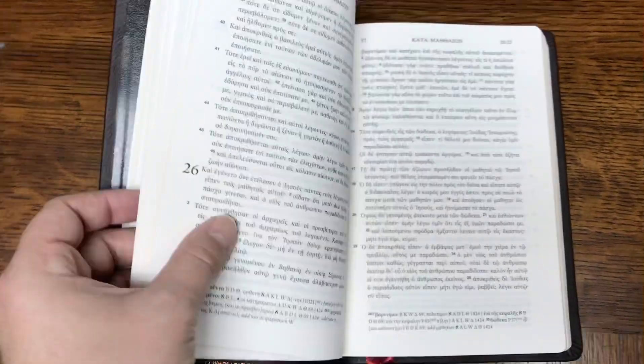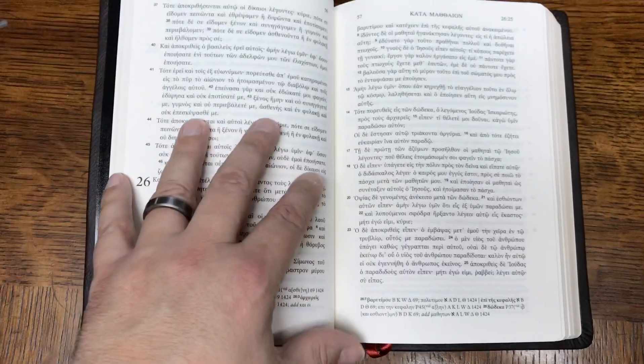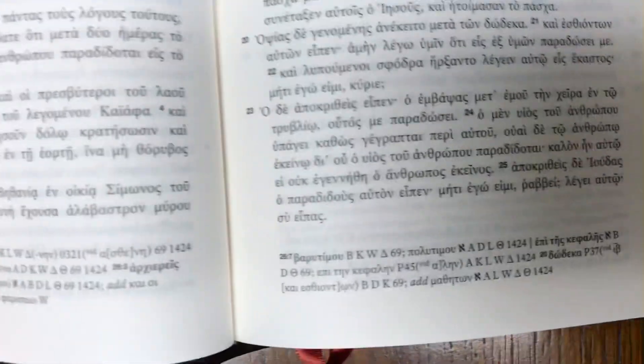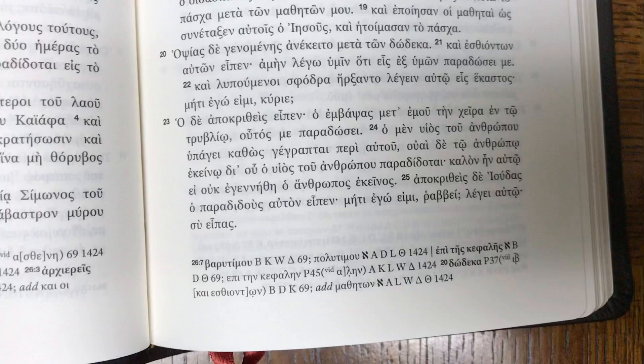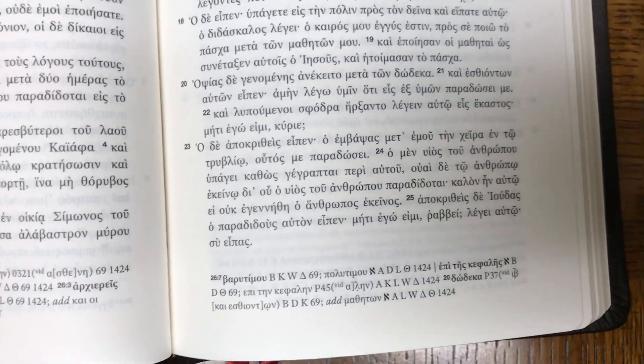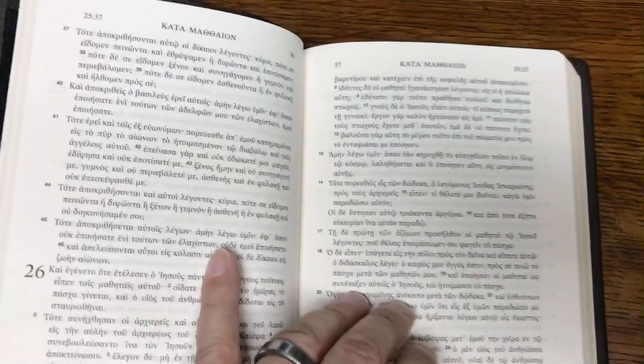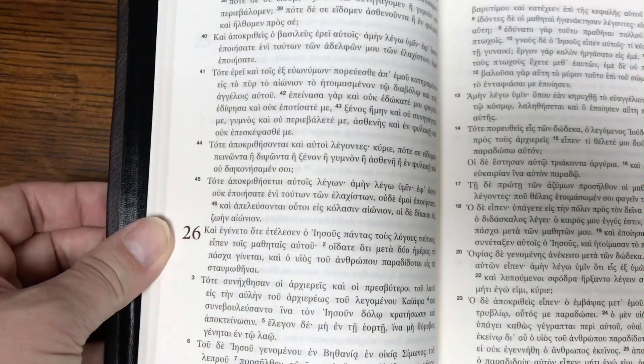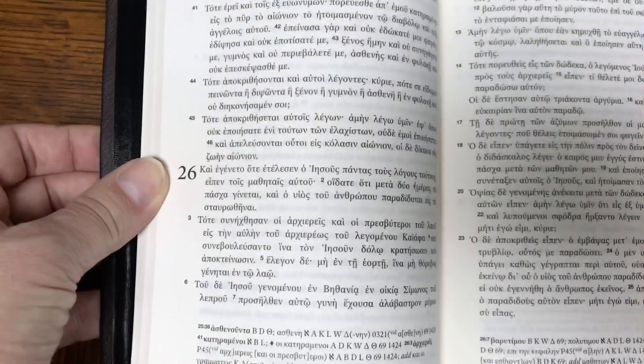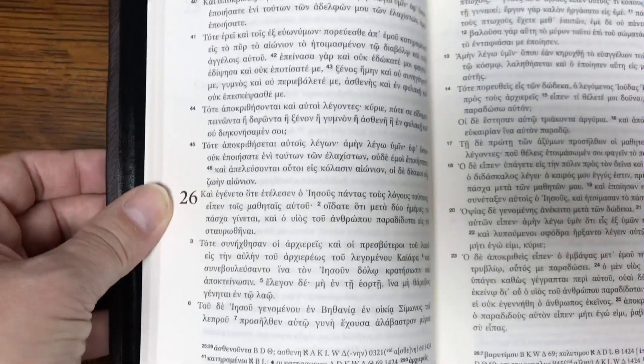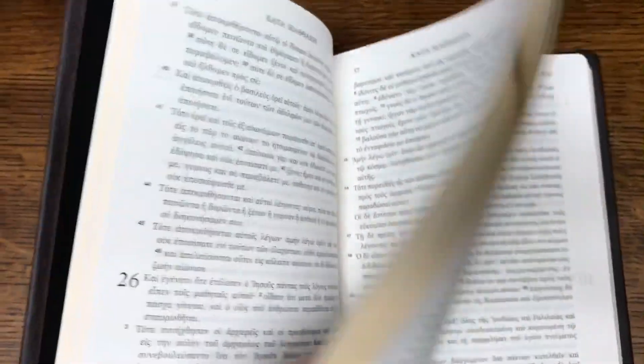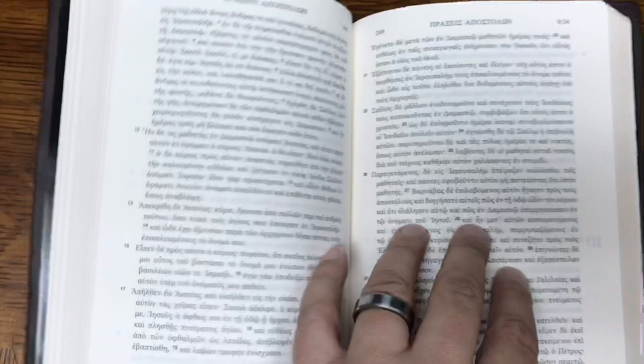This particular edition is rather sparse in the apparatus here of the different manuscripts that it lists. But it's very beautifully done. You can see the font size here, just really a gorgeous edition of the New Testament, Greek New Testament.